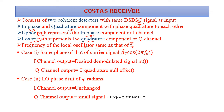Let us consider two cases. For the first case, if the local oscillator has the same phase as the carrier signal AC·cos(2πf_c·t) — that is, no change in phase — then the I channel output will be your desired demodulated signal M(t), and your Q channel output will be equal to zero, due to the concept of quadrature null effect. In case two, if there is a certain drift in the local oscillator phase of φ radians, then the I channel output will be unchanged, and the Q channel output will have a small signal present, proportional to sin(φ), which is approximately equal to φ for small φ.